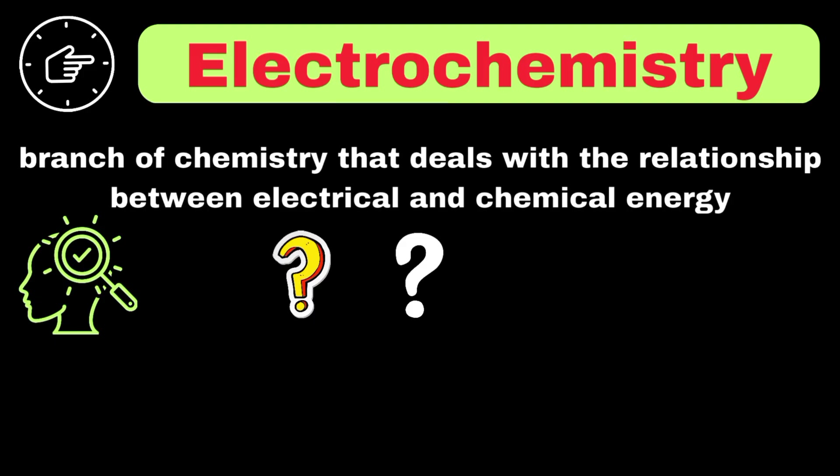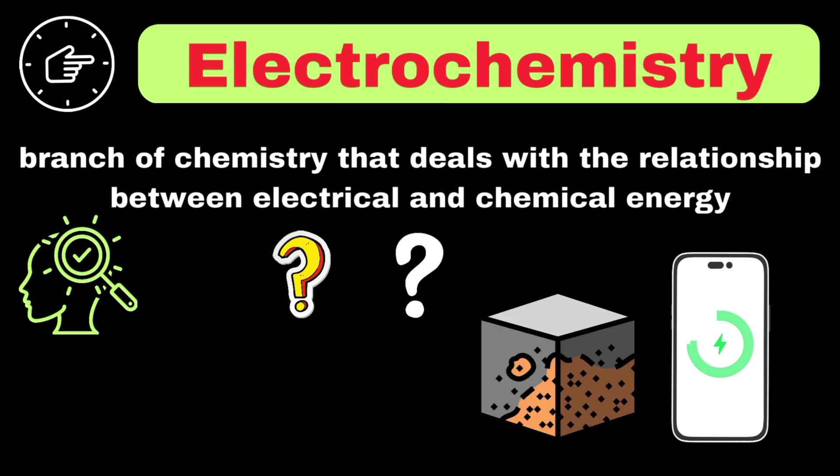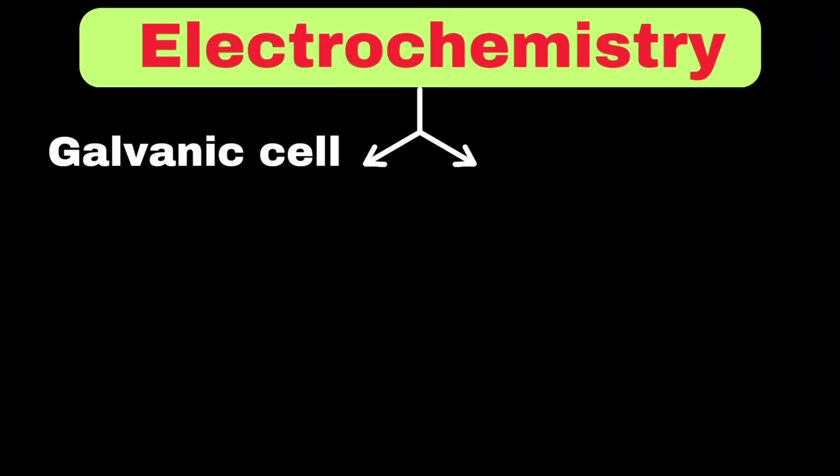These processes are happening all around us, from the batteries in our phones to the corrosion of metals. Electrochemistry can be divided into two main types of cells: galvanic cells and electrolytic cells. Let's explain each type in detail.